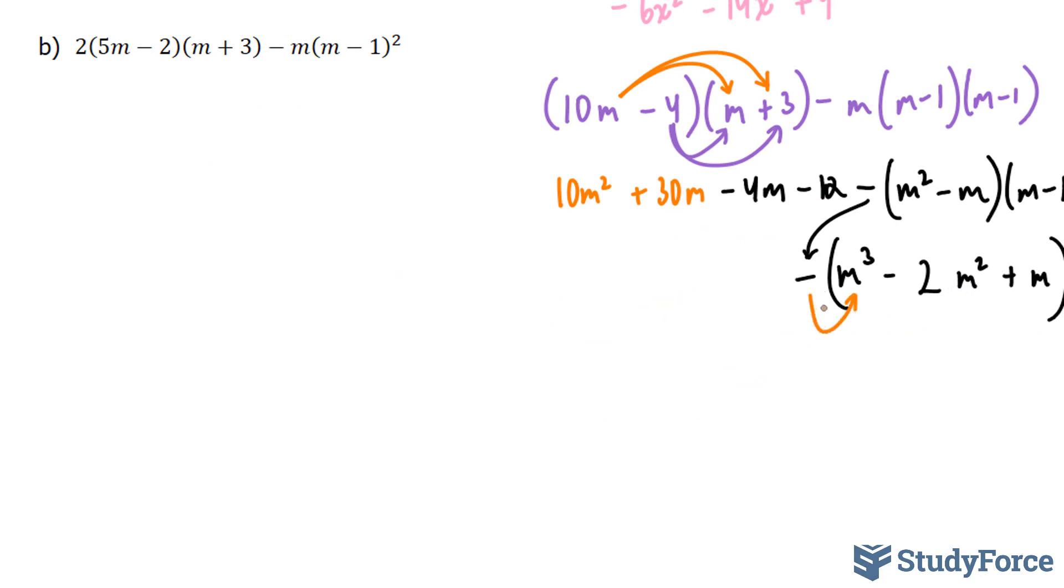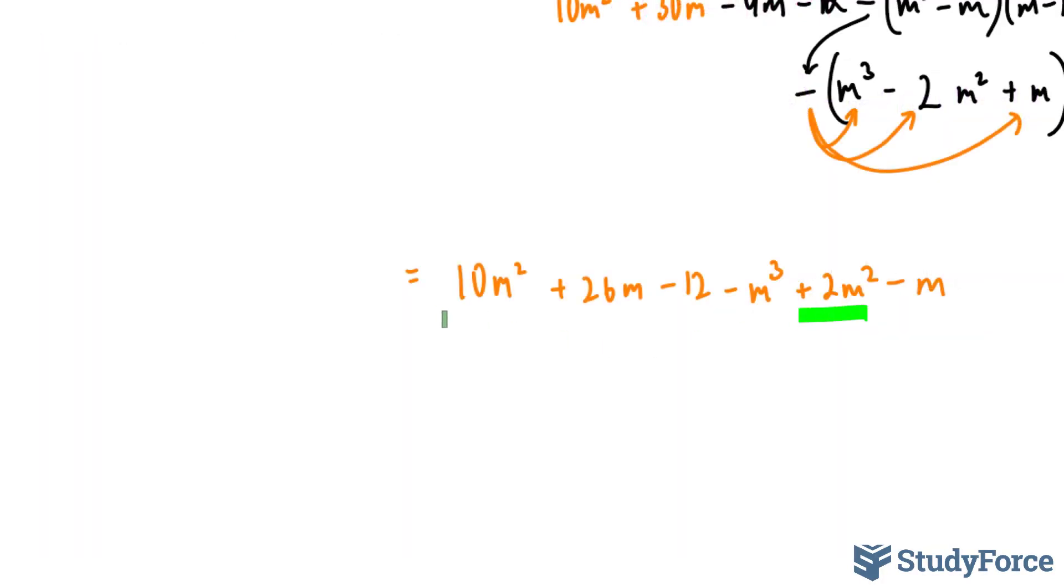And this minus will influence every term within the brackets. This leaves us writing it all from the beginning, 10m squared positive 26m minus 12 minus m cubed plus 2m squared minus m. This term and this term and this term are alike.